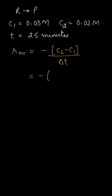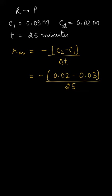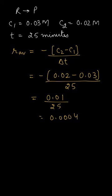So that would be minus of C2, which is 0.02 — the final concentration — minus the initial concentration, which is 0.03, divided by the time, which is 25 minutes. When we solve this, it equals 0.01 upon 25, which gives us 0.0004 mole per minute.